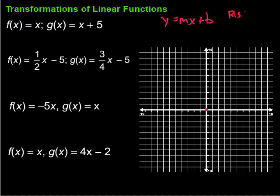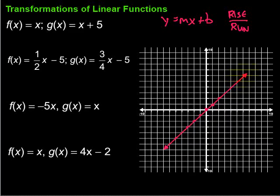Slope is rise over run. With a slope of 1, that's 1 over 1, so we go up 1 over 1 repeatedly. We can also go down 1 over 1 in the other direction to get more points, then sketch the graph through all those points using the line tool.